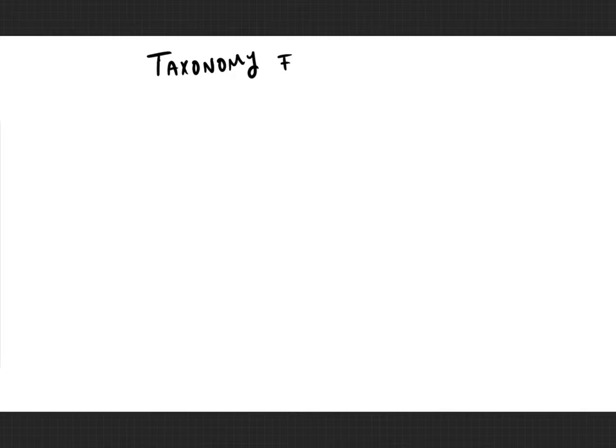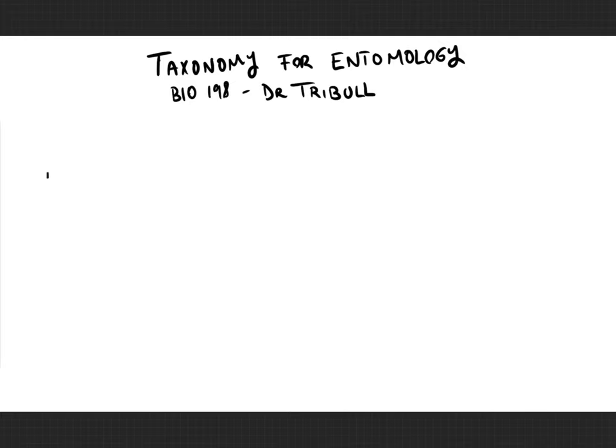Hi everyone. In this lecture, I'm going to be talking about some basics about taxonomy for entomology. Taxonomy is basically the science of naming things and also the science of putting smaller groupings into larger groupings.